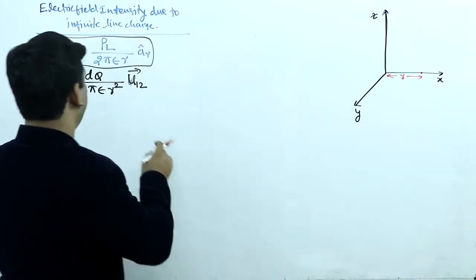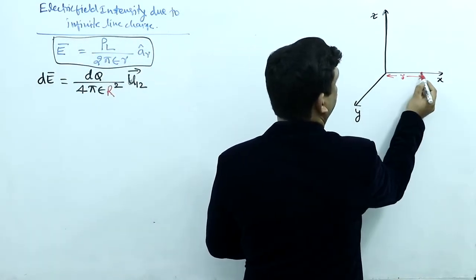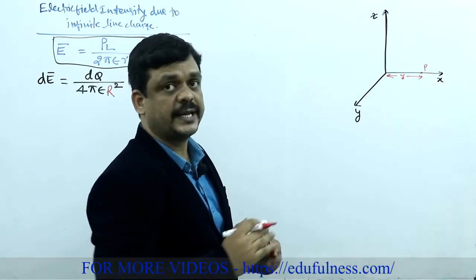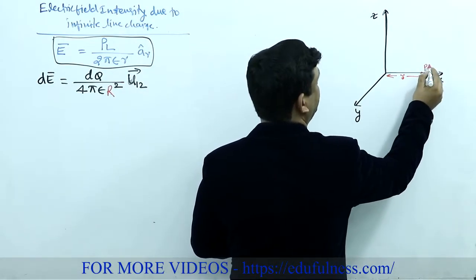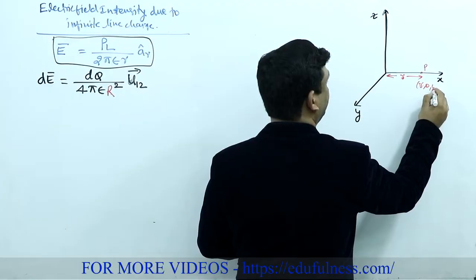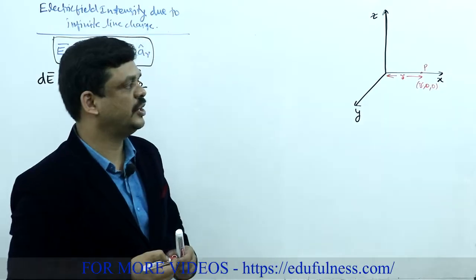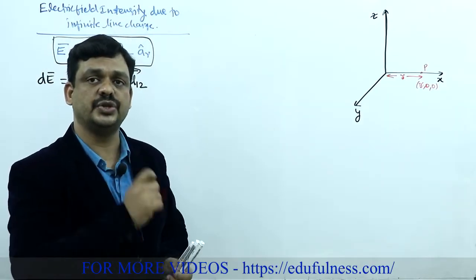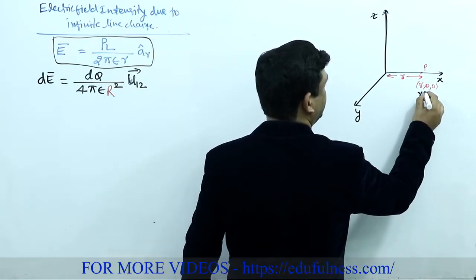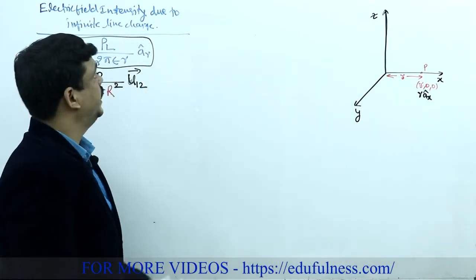The distance from the origin to this point is r. From the origin, the point located on the x-axis has coordinates (r, 0, 0), so the position vector of this point is r·ax.